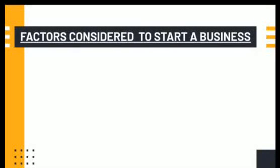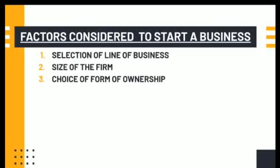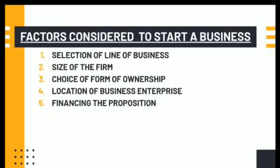We have already studied the five factors: selection of line of business, the size of the firm, the choice of form of ownership, the location of the business enterprise, and the financing of proposition. These five factors we have already studied in our previous class.